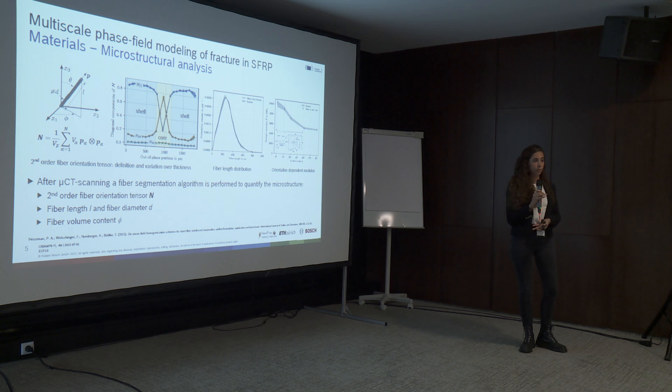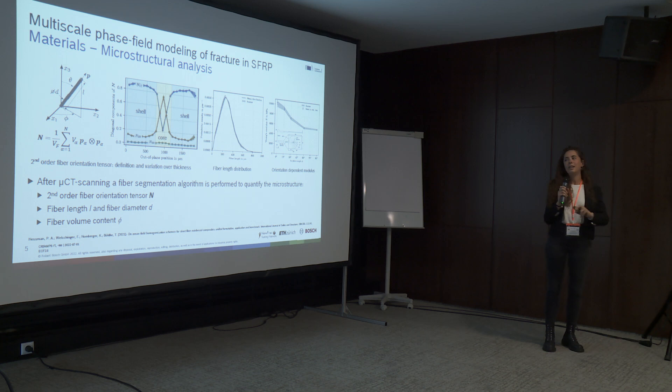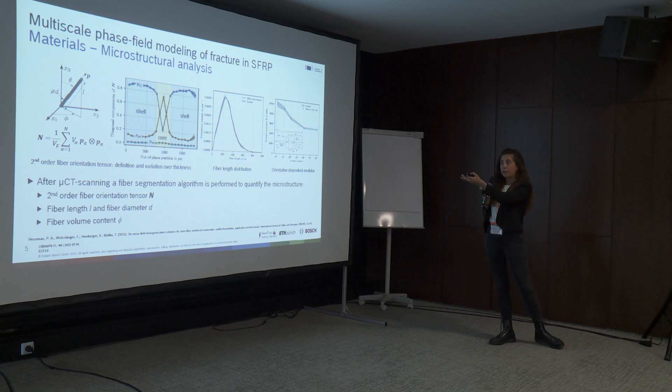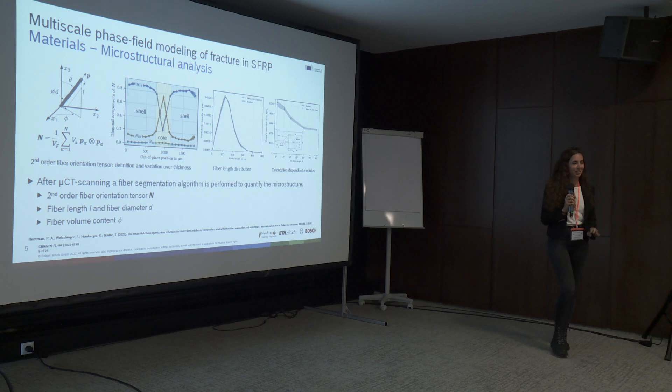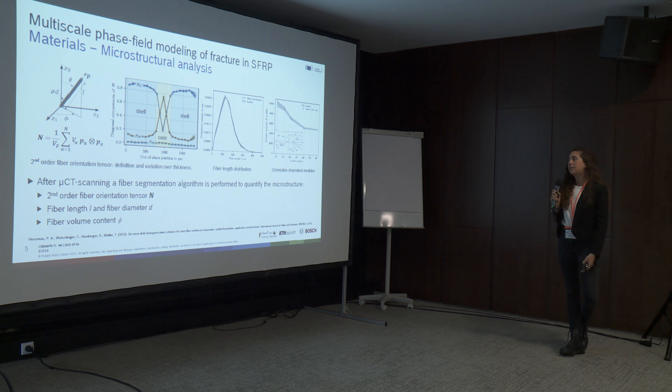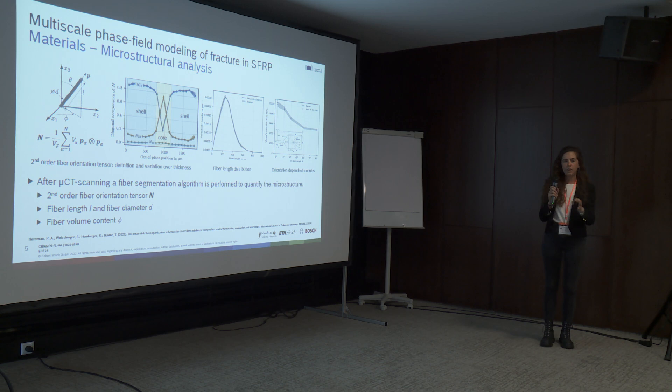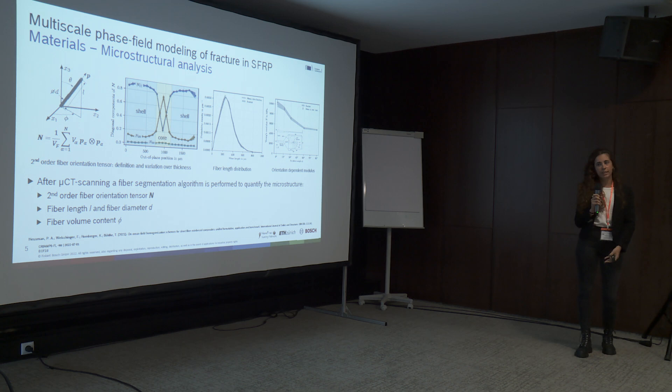From the isolated fibers we can obtain the fiber orientation tensor, here called N, which contains in an average sense the direction of all fibers in a control volume. This is a second order tensor and we can plot its principal values. We can already see the shell-core effect shown in the previous image. Besides the fiber orientation tensor, we are also interested in other parameters such as fiber length.